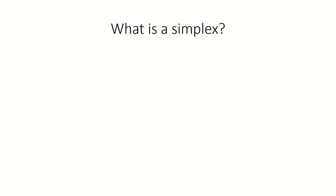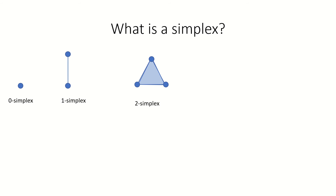A simplex is a generalization of a triangle to any dimension. For example, a zero simplex is a point, a one simplex is a line segment, a two simplex is a triangle, a three simplex is a tetrahedron, and so on. Now we can't fully represent the higher dimensional analogs with the 3D space we have to work with, but we can still define them mathematically.